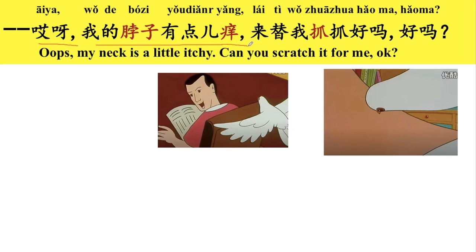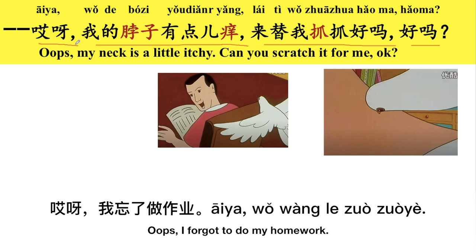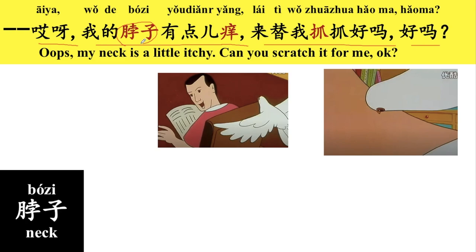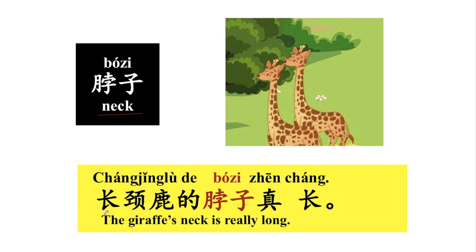哎呀，我的脖子有点痒，来替我抓抓好吗？好，哎呀，那我们在说哎呀的时候呢，是有一些不好的事情，我们会说哎呀。For example, I can say, 哎呀，我忘了做作业。I forgot to do my homework. 好，我的脖子有点痒。脖子就是neck.